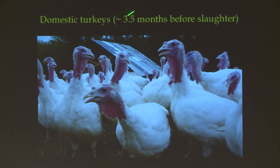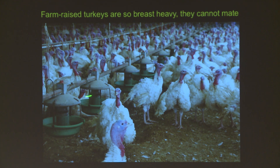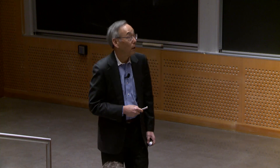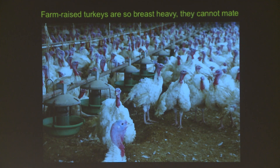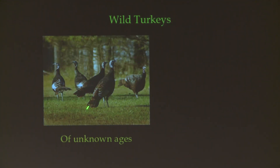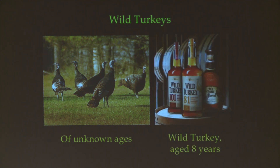This is a domestic turkey — three and a half months before slaughter. They're raised in high densities, but they're so heavy the males can't mount the females, so they're actually bred by artificial insemination — again an industrial process. By 12 to 14 weeks, they are 12 to 14 pounds. Those are what we call bred turkeys — genetically modified turkeys. That wild turkey — to get to that size, you've got to be years old, not months old.